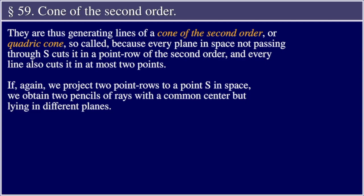If again we project two point rows to a point S in space, we obtain two pencils of rays with a common center, but lying in different planes.